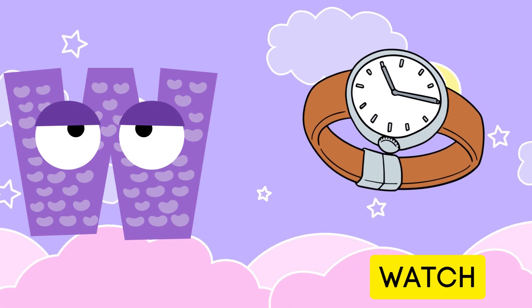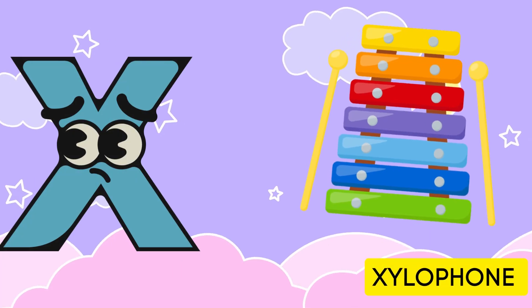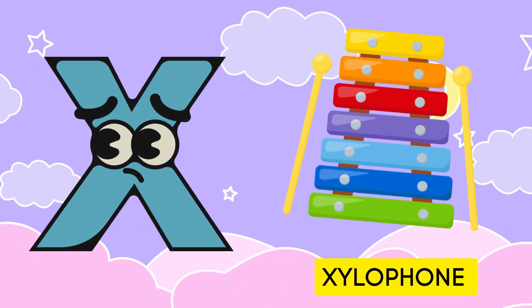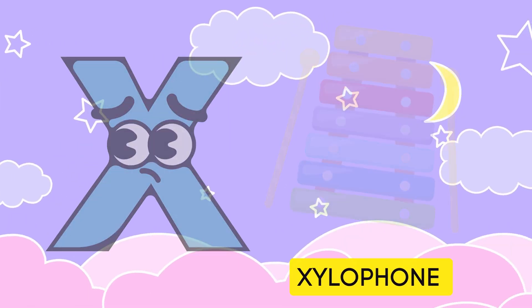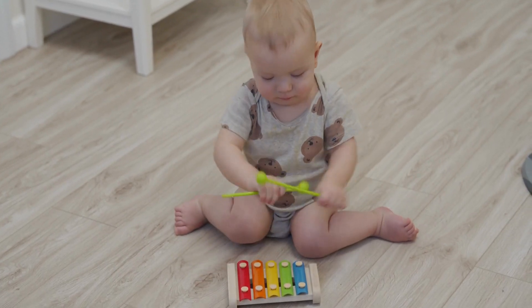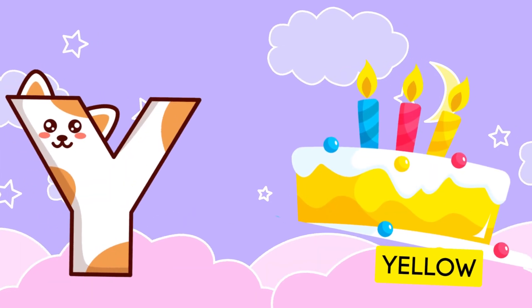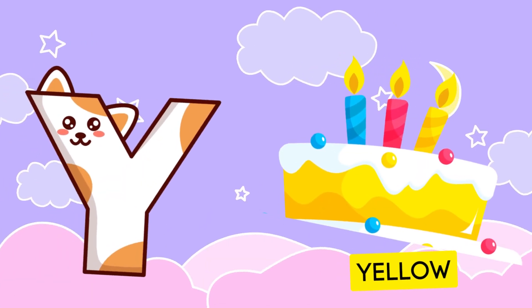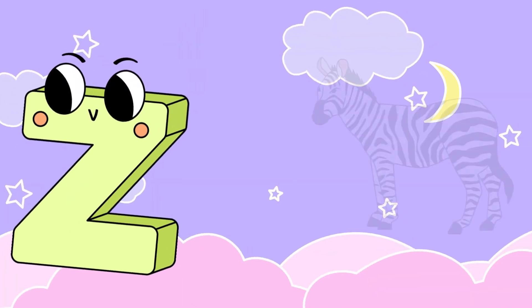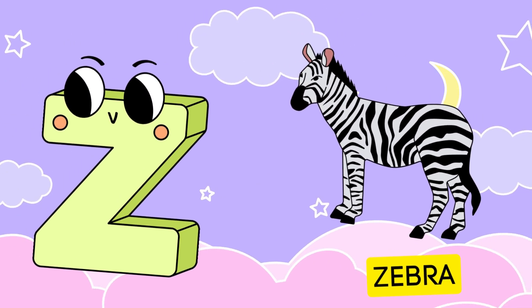W is for watch, w-w-watch. X is for xylophone, z-z-xylophone. Y is for yellow, ye-ye-yellow. Z is for zebra, z-z-zebra.